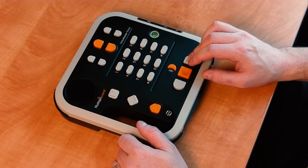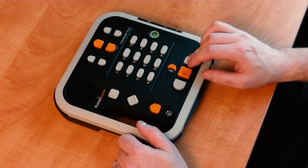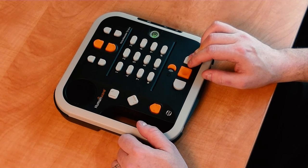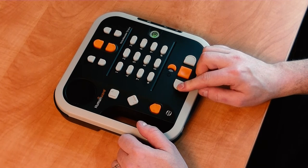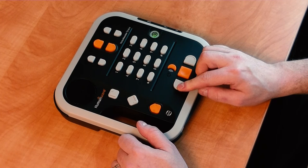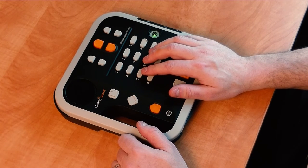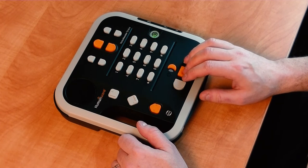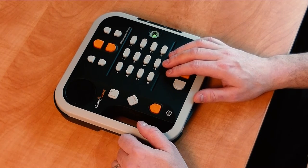I can fast forward through the book by pressing the fast forward button. I can rewind it by pressing the rewind button. So that's how you play a daisy audio book.